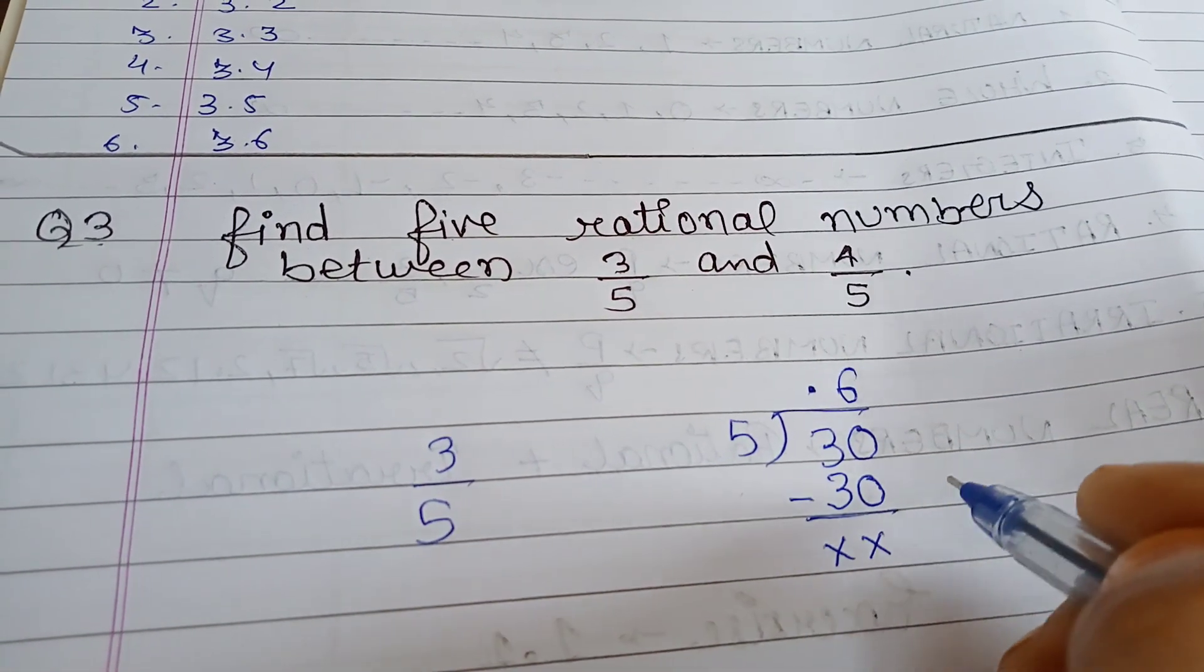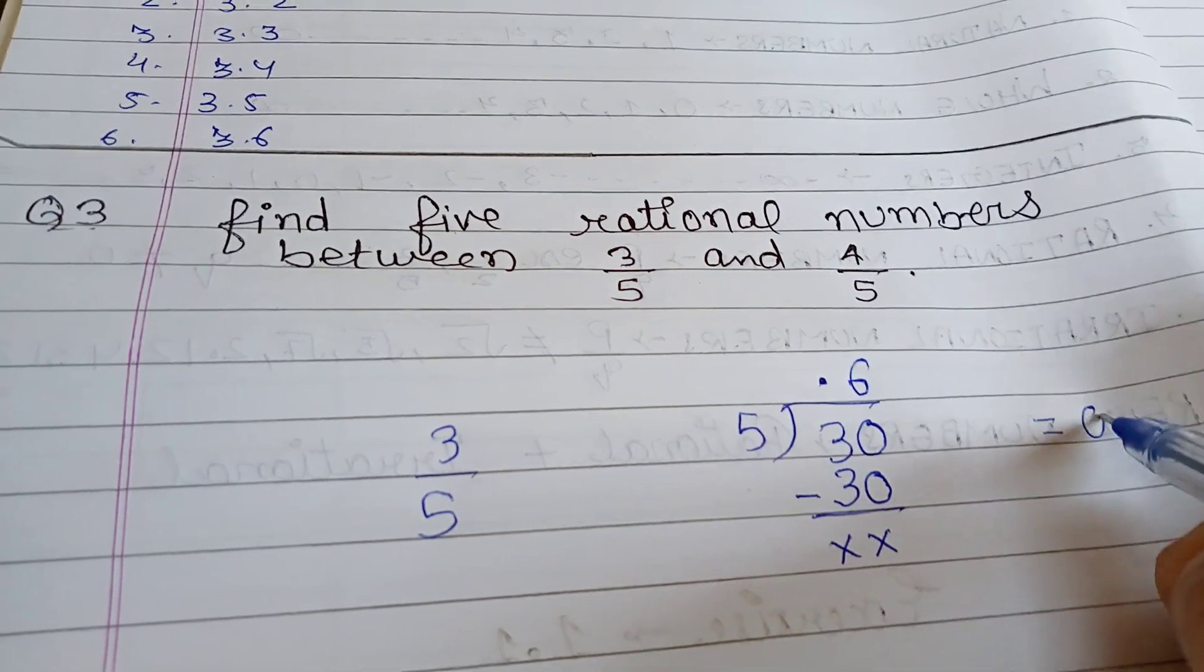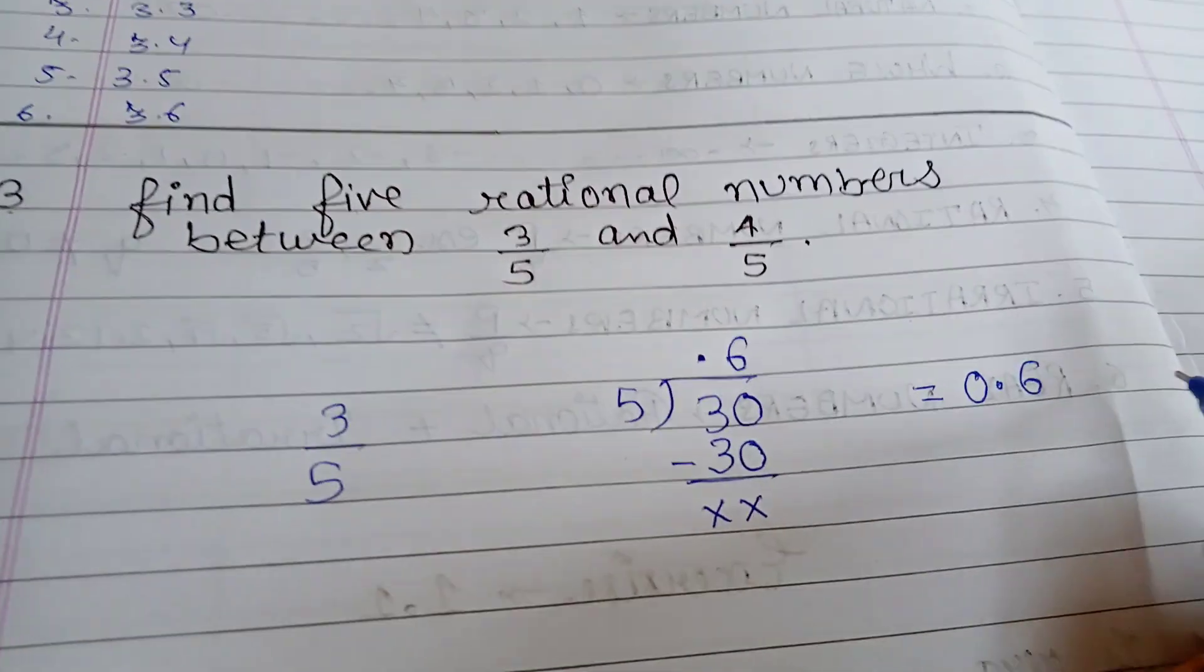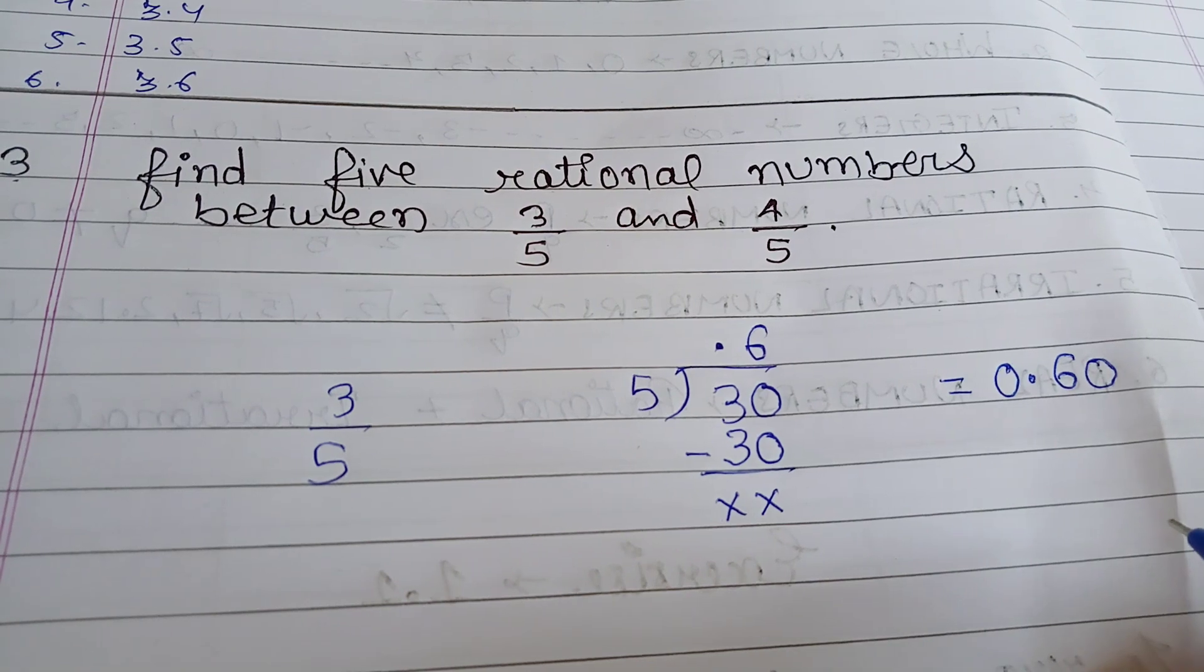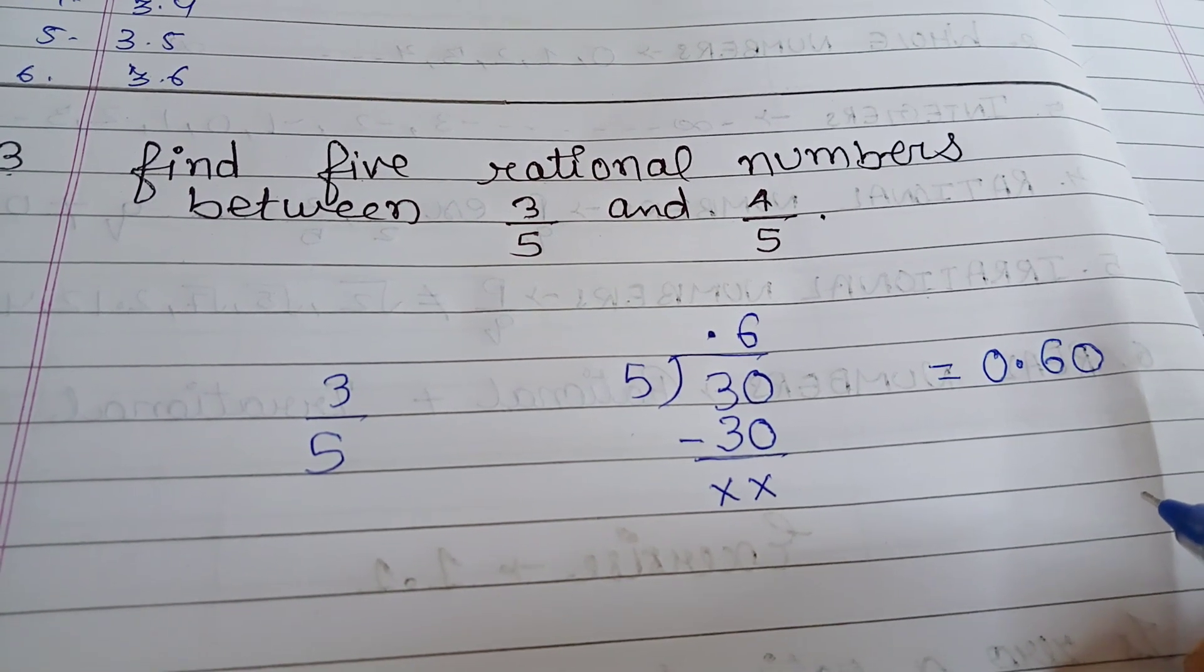We are getting the answer 0.6. If we want, we can apply 0. So what did we get? 3 by 5 answer is 0.60.